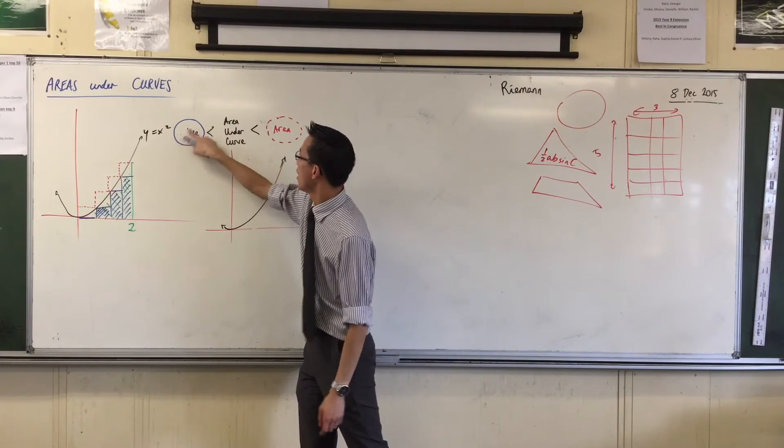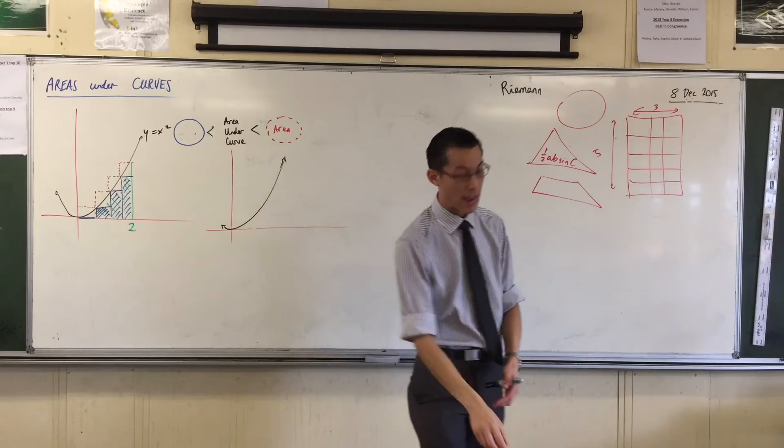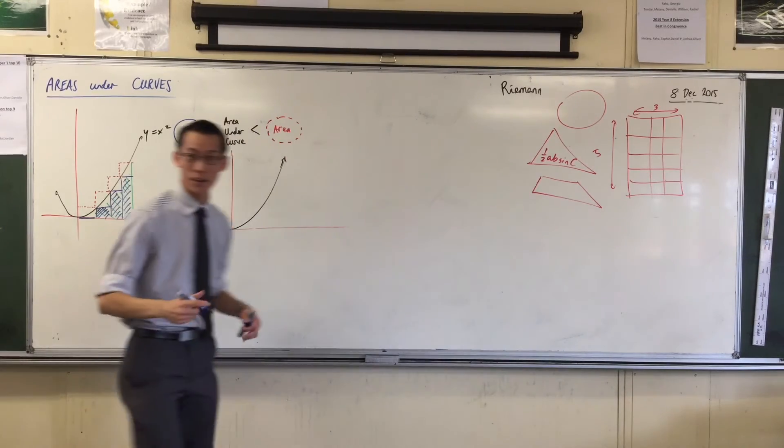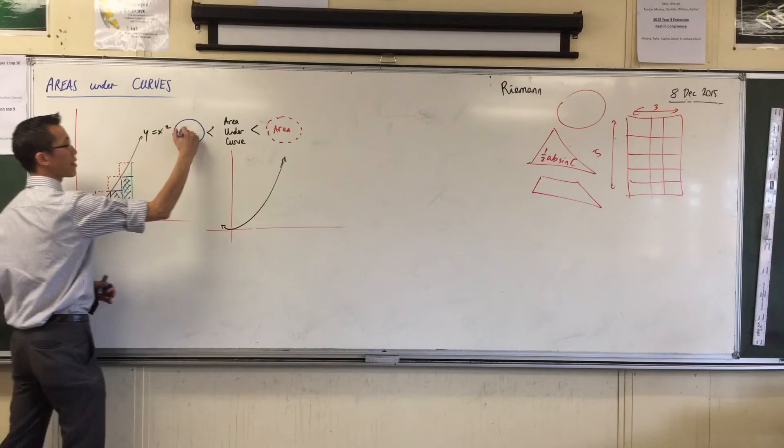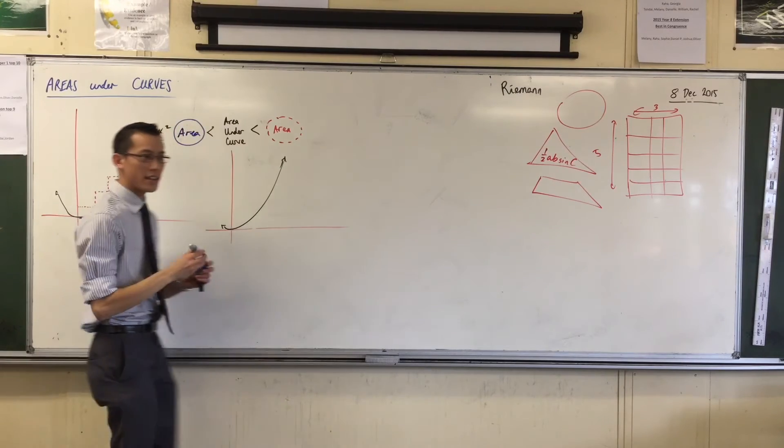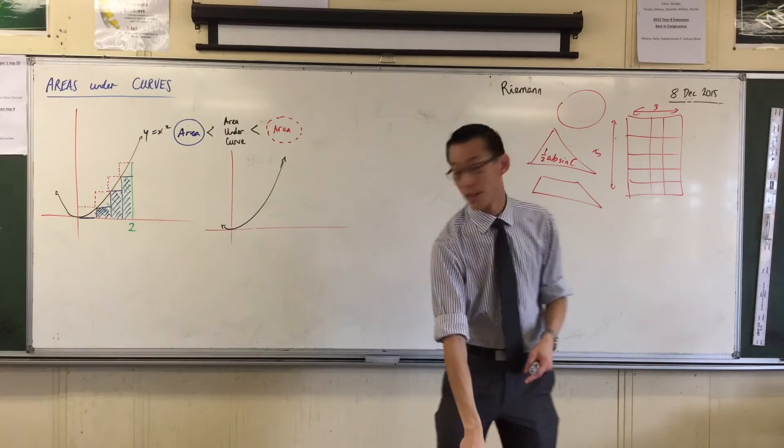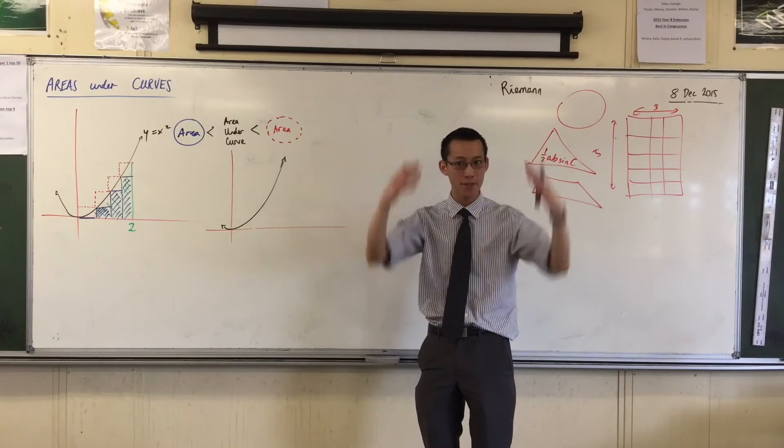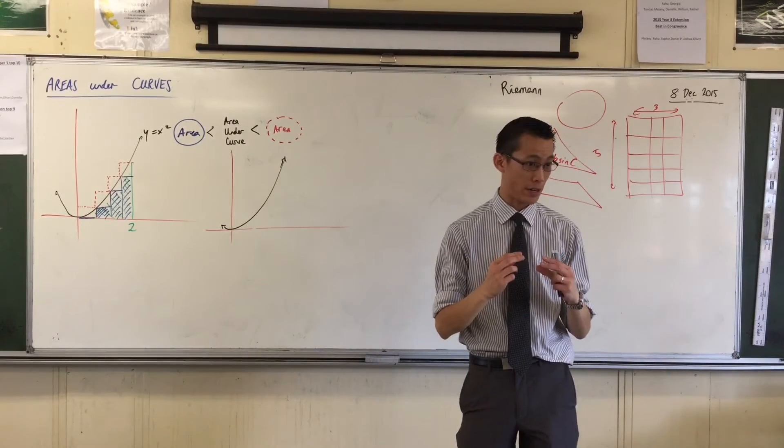If I know it's between these two values, all I need to do is to get these two areas, the blue one and the red one, to get them really, really close together. To get the blue rectangles underneath and the red rectangles above, to get those values very, very close.